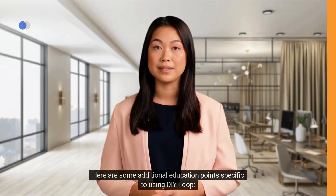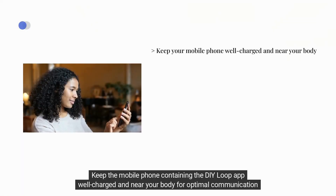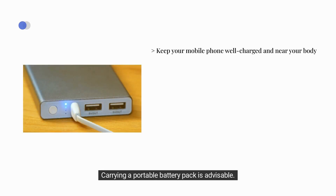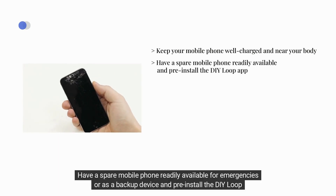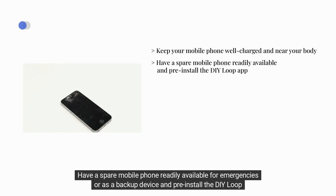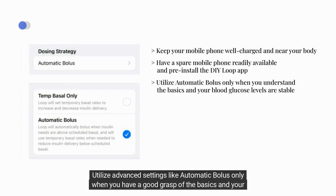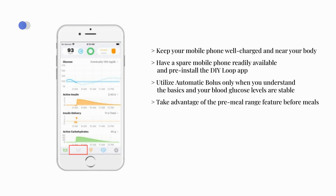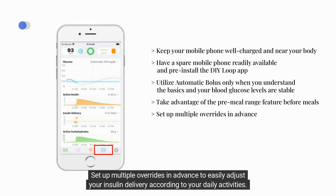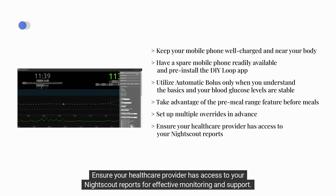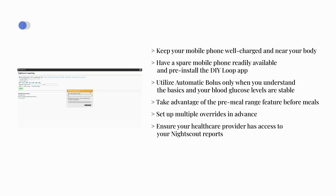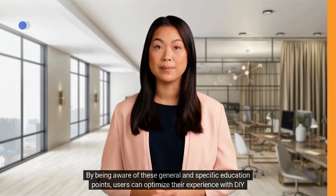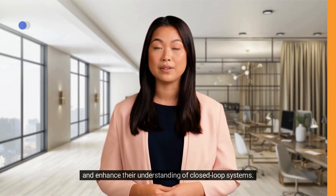Here are some additional education points specific to DIY Loop: keep the mobile phone well charged and near your body for optimal communication between devices; carry a portable battery pack; have a spare mobile phone with the DIY Loop app pre-installed available for emergencies. Utilize advanced settings like automatic bolus only when you have a good grasp of the basics and blood glucose levels are stable. Take advantage of the pre-meal range feature before meals, and set up multiple overrides in advance to easily adjust insulin delivery according to daily activities. Ensure your healthcare provider has access to your NightScout reports.